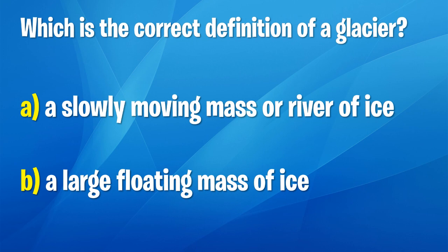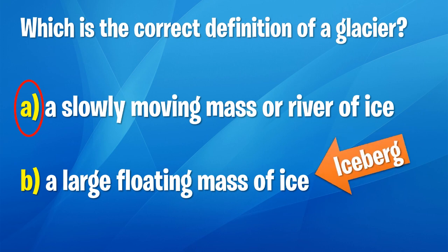Is it A, a slowly moving mass or river of ice? Or is it B, a large floating mass of ice? I'm going to give you a few seconds to think about your answer. The answer is A — a glacier is a slowly moving mass or river of ice. B is an iceberg.